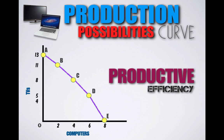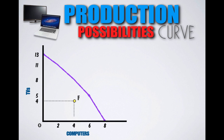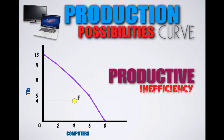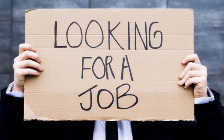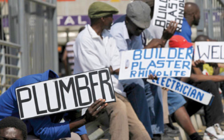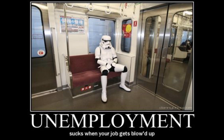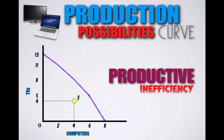Every country would like to produce on their production possibilities curve. A country that produces inside of their PPC, like Point F, is experiencing productive inefficiency. At Point F, Country B is producing four TVs and four computers, but is wasting scarce resources and could be producing more. The most common type of productive inefficiency is excessive unemployment, where the labor of workers is being wasted because they can't find jobs, causing a country to produce below its capacity.